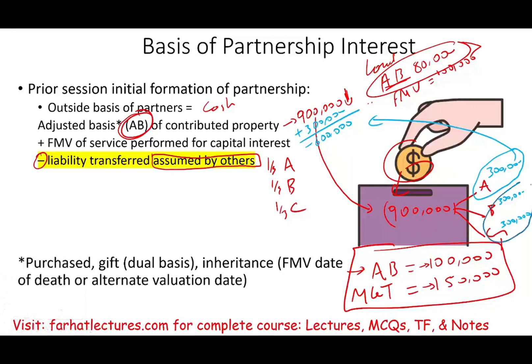To summarize: you contributed the liability, so you reduce your basis by $900,000 gross. But you're responsible for $300,000 once it's inside the partnership, so you only net reduce by $600,000. The liability transferred and assumed by others — $600,000 — is the reduction. That's how you compute the liability assumed by others.